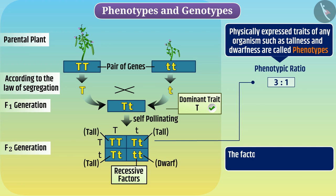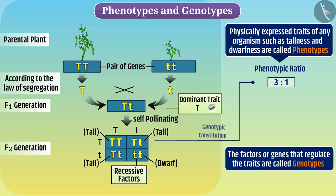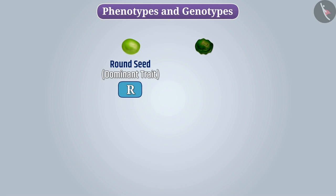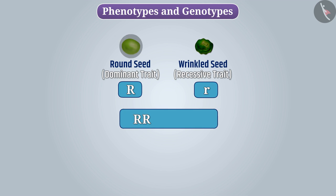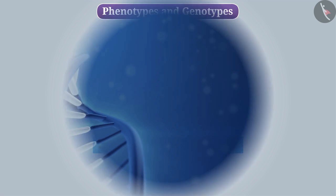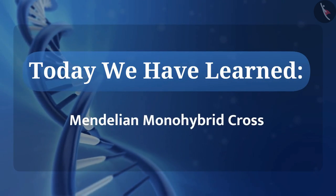Similarly, the factors or genes that regulate the traits are called genotypes. If we talk about the genotypic constitution of these plants, we get their genotypic ratio. Now, suppose if the round trait expressed as R is dominant for seeds and the wrinkled trait expressed as r is recessive, then what will be the result of breeding between a plant having RR genotype and a plant having rr genotype? Try this with the help of a Punnett square. Today we have learnt Mendelian monohybrid cross.